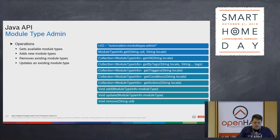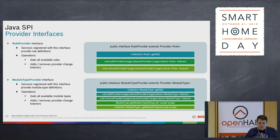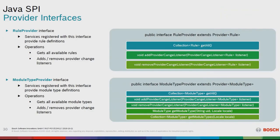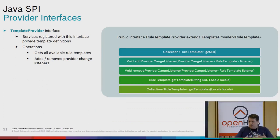The same Java API pattern applies for module types and rule template administration. There is also a Java SPI where you can collect or retrieve all available rules and add or remove them, with the same pattern applying to module types and the template provider.